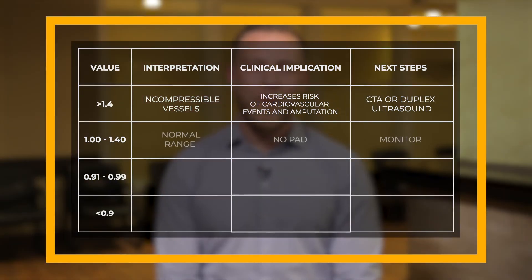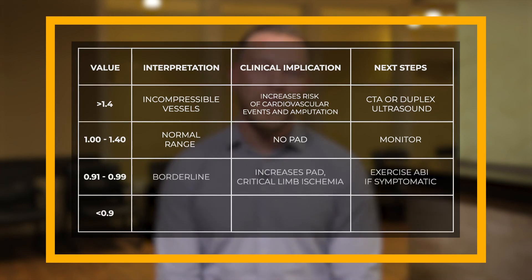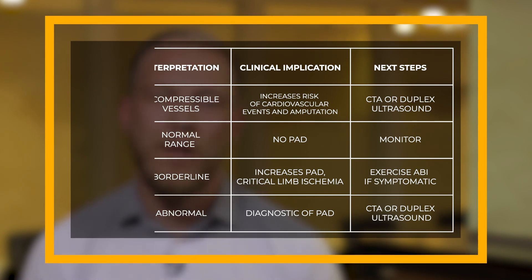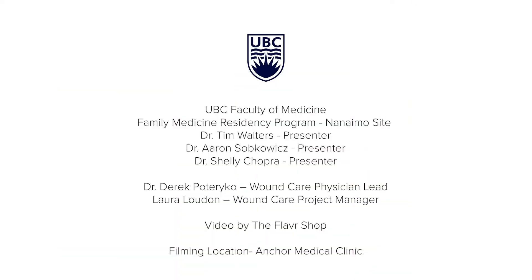Values between 1.0 and 1.4 are considered normal. Values between 0.91 and 0.99 are classified as borderline; these individuals remain at risk of PAD and critical limb ischemia, and the American Heart Association recommends they undergo ABI testing following exercise. Values less than 0.9 are diagnostic of PAD; these individuals should be further investigated with CT angiography and duplex ultrasound. Remember, these are guidelines and your ABI assessment should be used in conjunction with your clinical assessment.